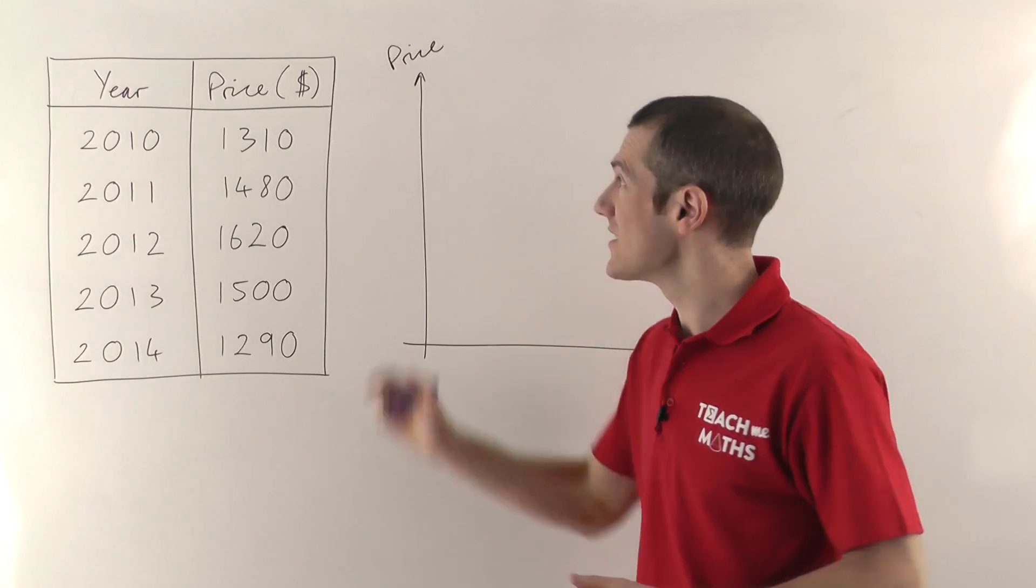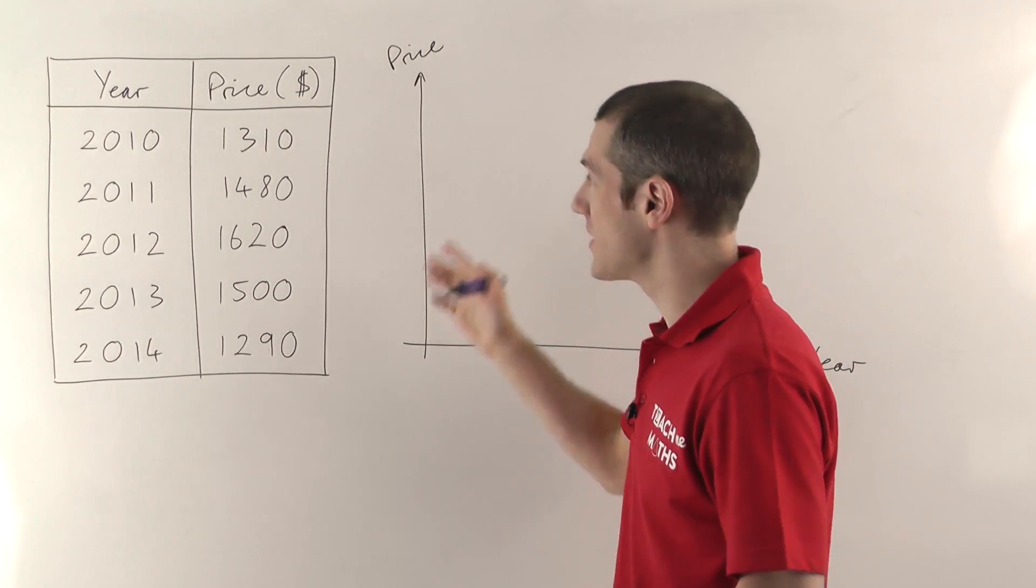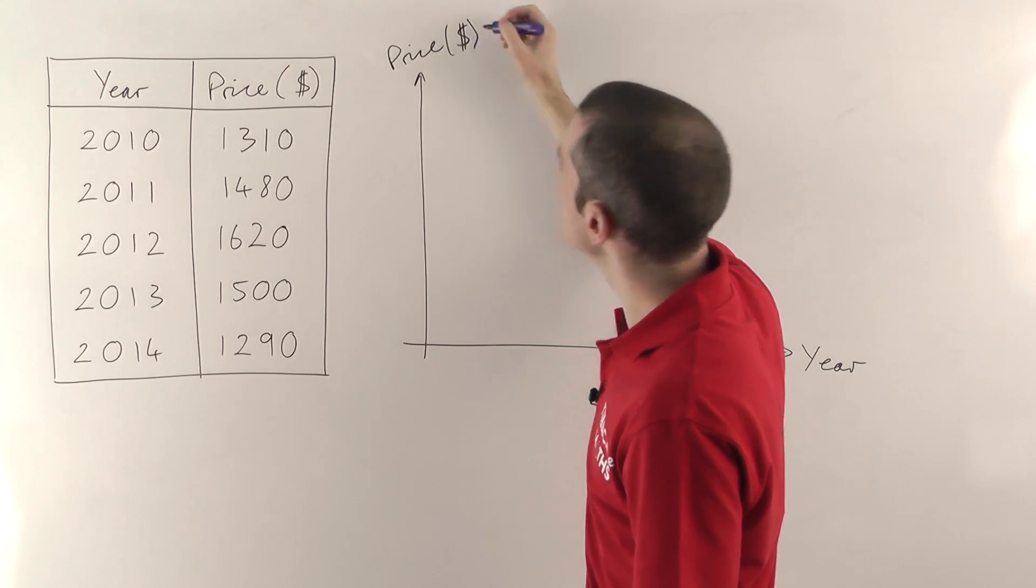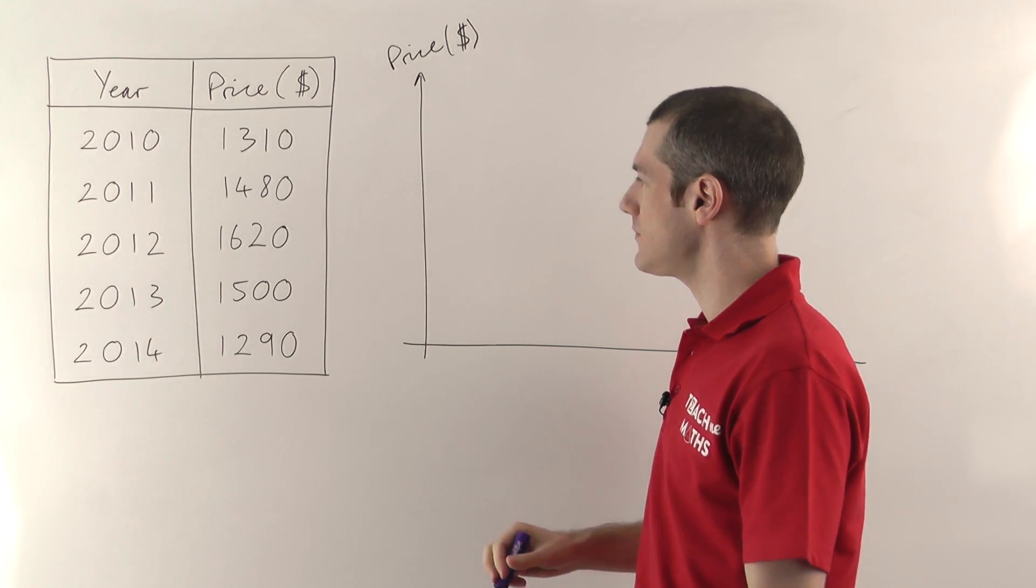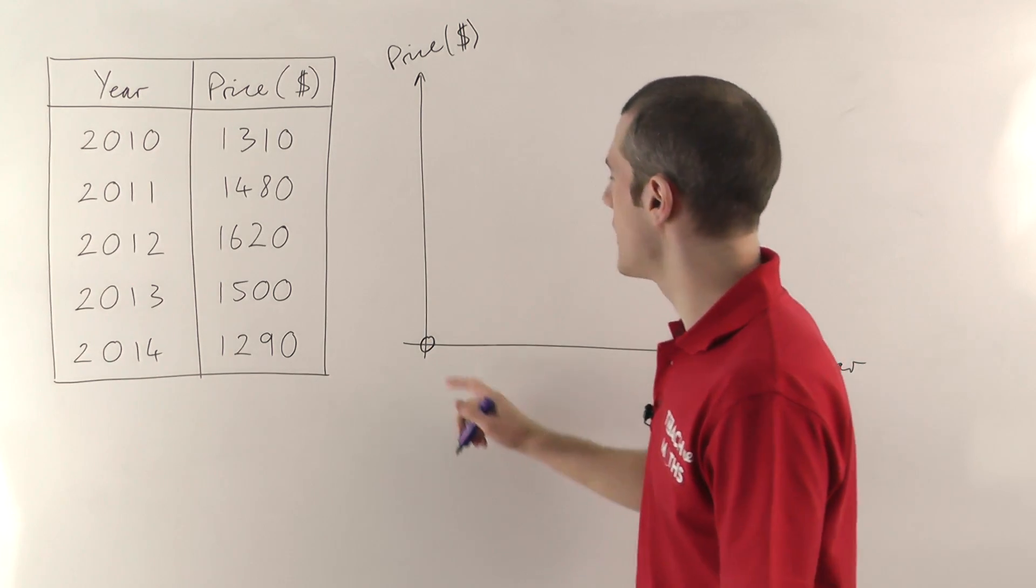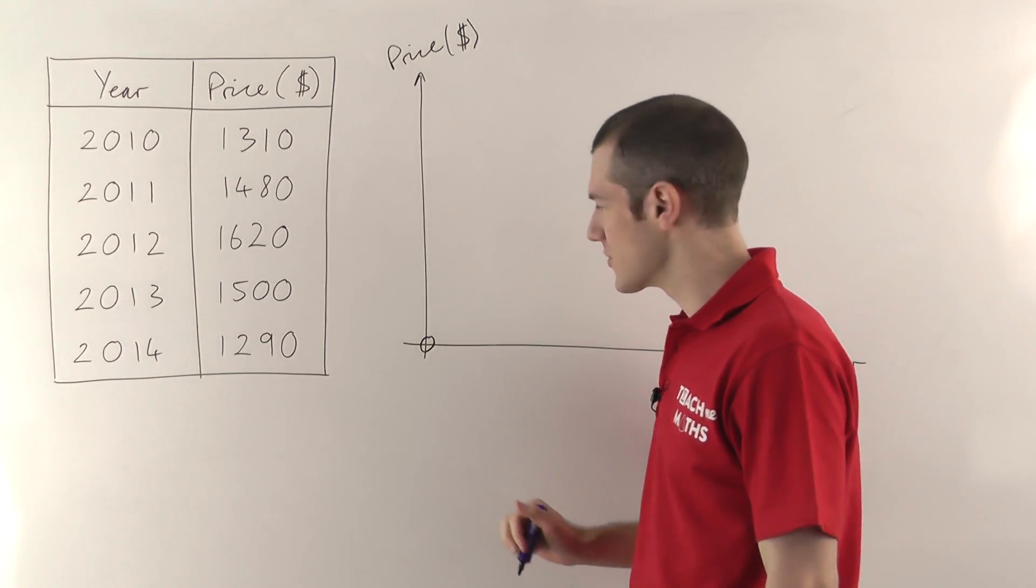You must specify the units. It's not enough to say price, you must say what it's measured in. In this case the price is being measured in dollars, so I'll stick dollars there. You usually just specify the units in brackets after the axis label. So the years then will go along the bottom. I usually put a little ring round those to show that's where the origin is, where the two things cross.